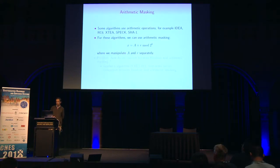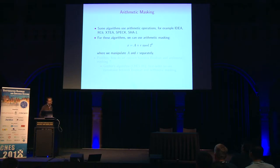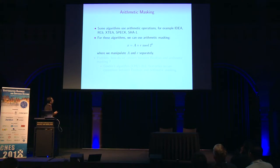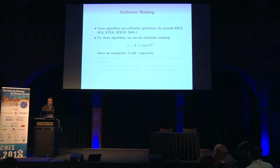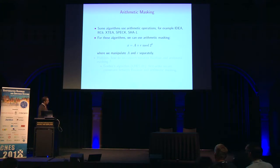Some algorithms combine Boolean and arithmetic operations — for example, HMAC and SHA-1. For these algorithms, we would also like to use arithmetic masking, in which the original variable X is shared between two arithmetic masks A and R modulo 2 to K, where K is the size of the registers, and we manipulate A and R separately.